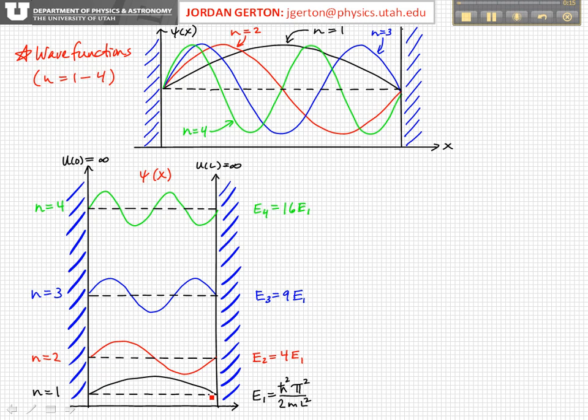And so again, the energy of this dotted line here, corresponding to this n equals 1 mode, is equal to h bar squared over pi squared divided by 2 ml squared. For n equals 2, it's that same thing times 4, because the energies go as the quantum number n squared, so it's 4 times the ground state energy.